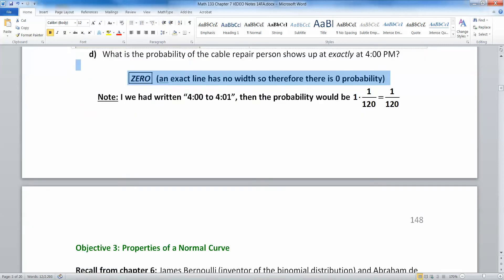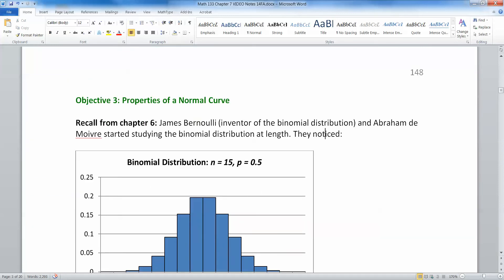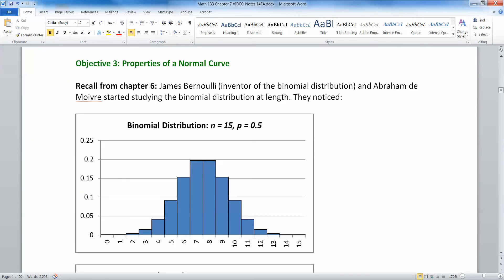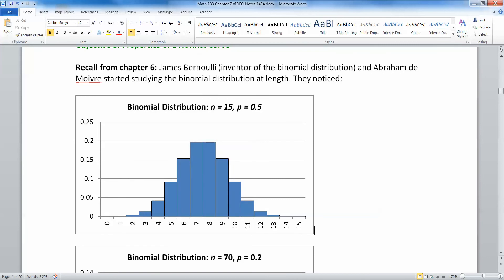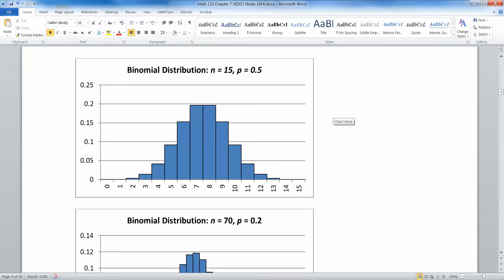Now, we want to take those same ideas and apply it to a binomial distribution. So James Bernoulli, who is the inventor of the binomial distribution, and Abraham de Moivre started studying the binomial distributions at length, and they noticed something. So when you've seen these graphs before, if you have a binomial distribution here with n equal to 15 and the probability of success is 0.5, it looks like that.